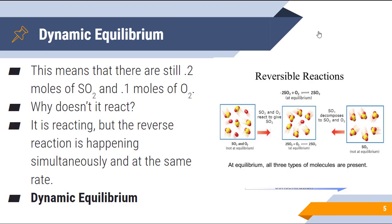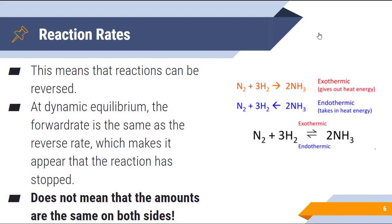Whatever reactants are left over are being converted to product, but the product is also being converted back to reactant. This is known as dynamic equilibrium, because even though on both sides you'll have constant concentrations — meaning that the concentrations on each side will not change — there's still a reaction taking place. It's just that the rate of the forward reaction is the same as the rate of the reverse reaction, meaning we're creating product simultaneously at the same time we're creating reactant. The reaction is still taking place, but we don't see any net change because the forward reaction is going at the same rate as the reverse reaction.